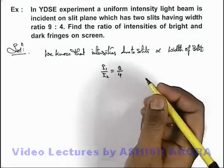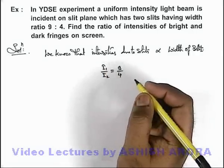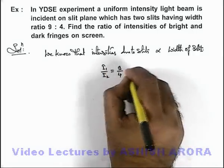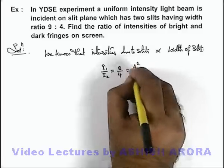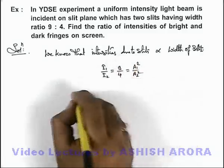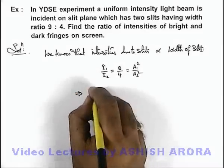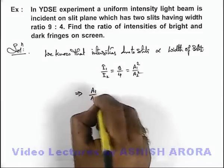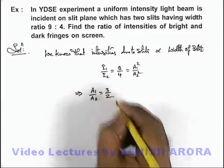And the intensities are proportional to square of amplitudes also, so this can be written as A₁² by A₂². This implies it will give us the ratio of amplitudes A₁ by A₂ which is equal to 3 by 2.